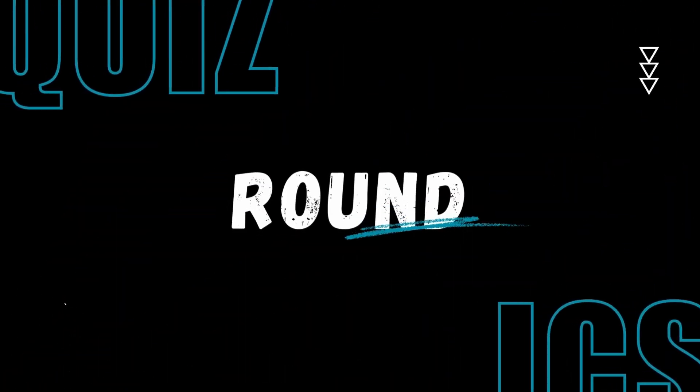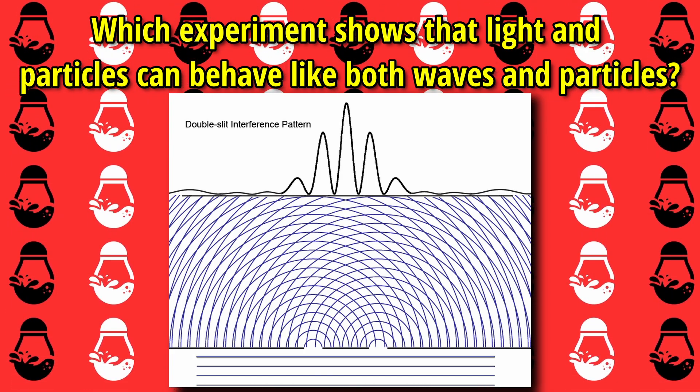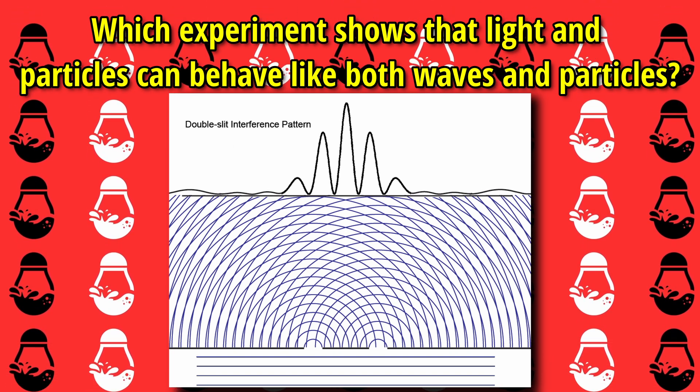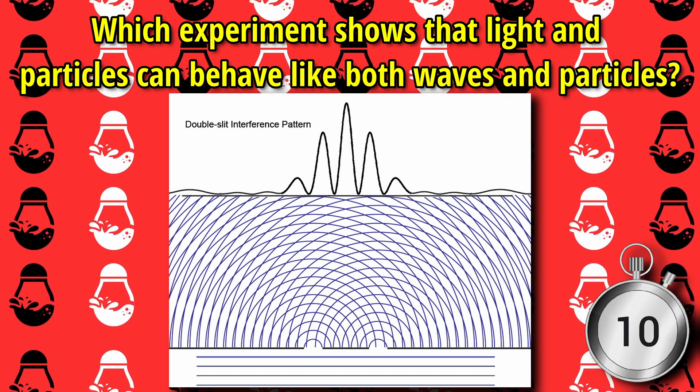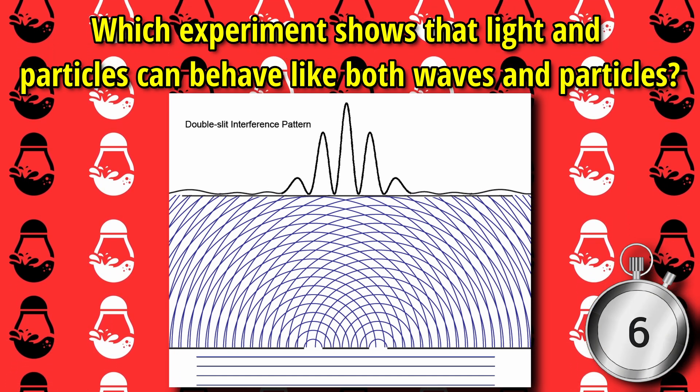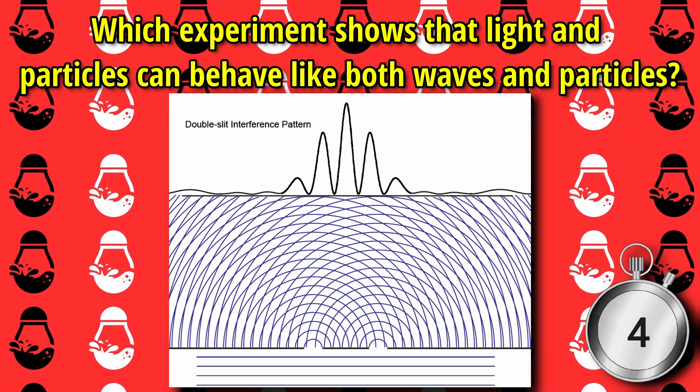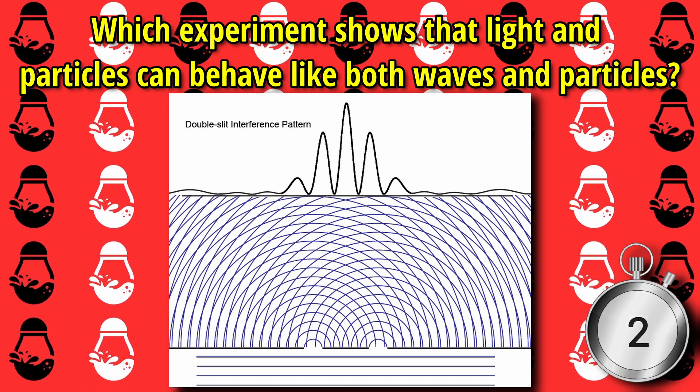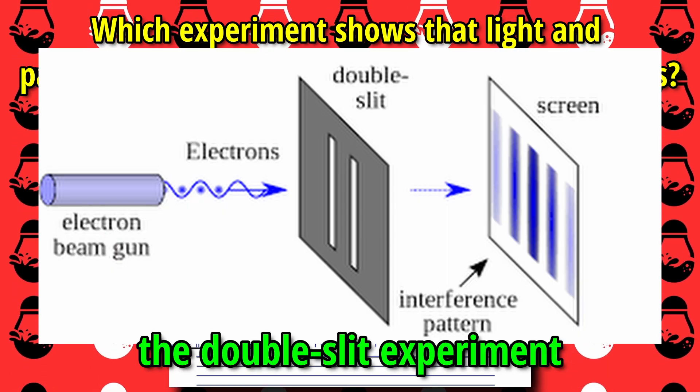Next round. Which experiment shows that light and particles can behave like both waves and particles? The answer is the double-slit experiment.